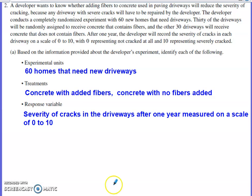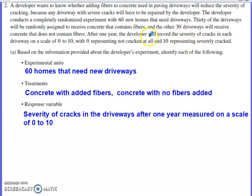The problem is talking about a developer trying to decide whether or not adding fibers to concrete used when building driveways is going to reduce the severity of cracking. The developer conducts a completely randomized experiment with 60 new homes that need driveways. 30 driveways will get concrete with fibers, the other 30 will receive concrete without them. After one year, they go back and rank the severity of the cracks on a scale of 0 to 10, where 0 means no cracks and 10 means severely cracked.